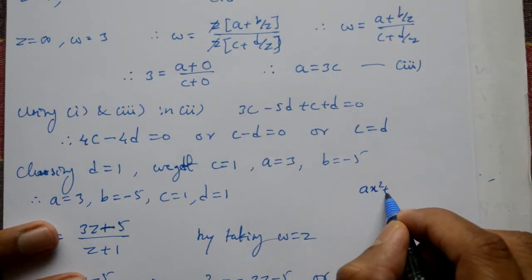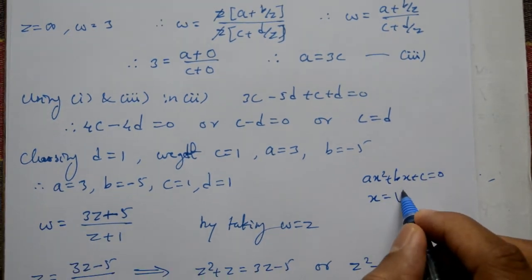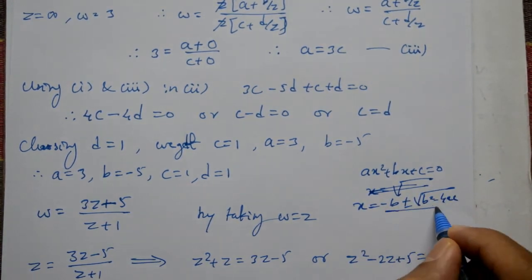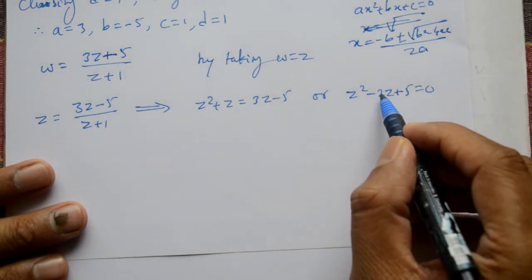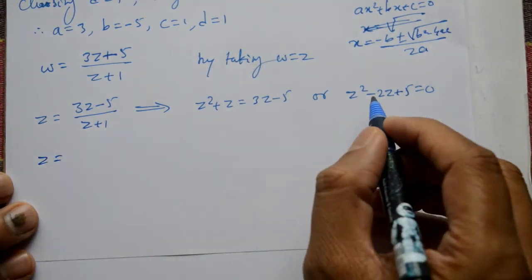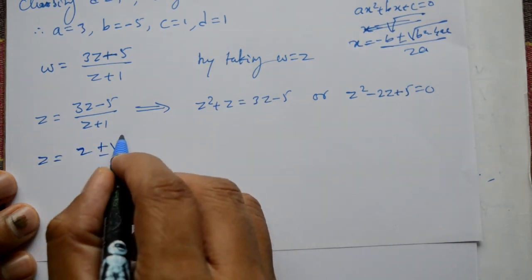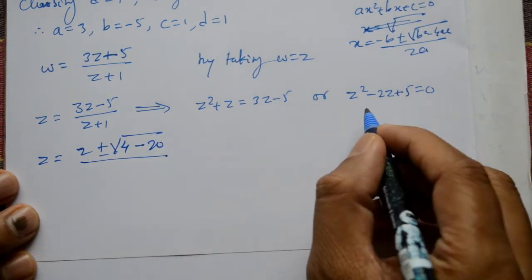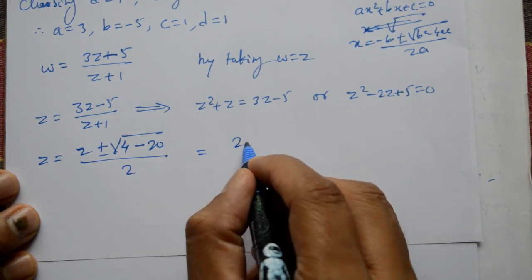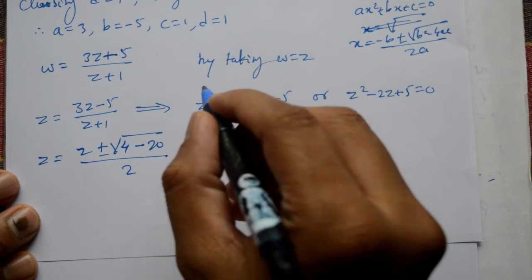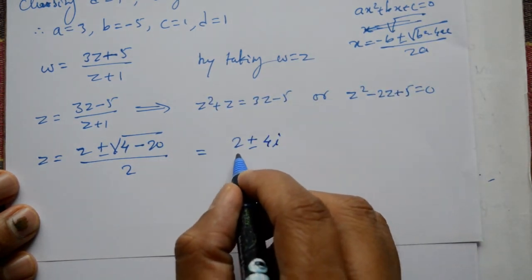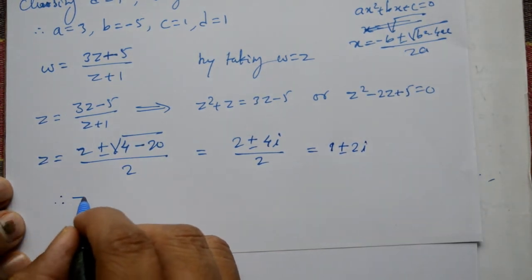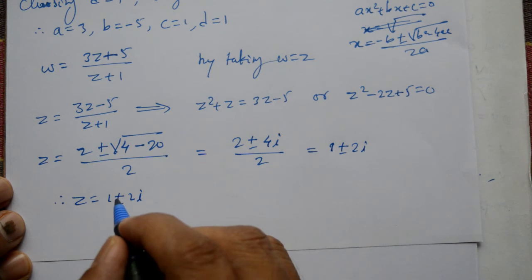Quadratic formula: for ax² + bx + c = 0, x = (-b ± √(b² - 4ac)) / 2a. Here a = 1, b = -2, c = 5. So z = (2 ± √(4 - 20)) / 2 = (2 ± √(-16)) / 2 = (2 ± 4i) / 2 = 1 ± 2i. These are the required invariant points.